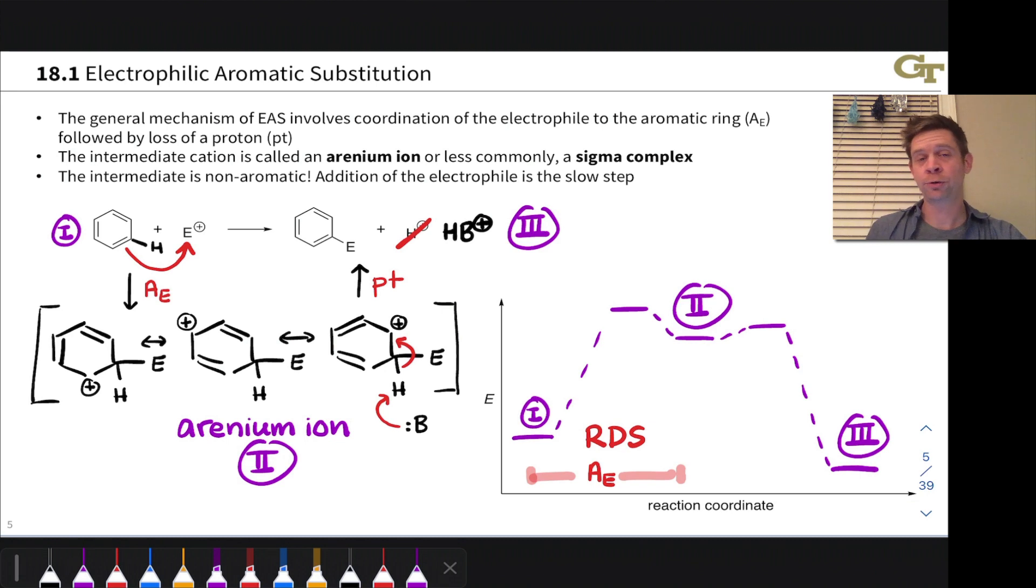To summarize, this is the prototypical mechanism for electrophilic aromatic substitution after generation of the active electrophile. Now, association of that electrophile to the aromatic pi system, we call that A sub E, followed by a proton transfer, specifically loss of a proton from the same carbon that picked up the new bond to E.